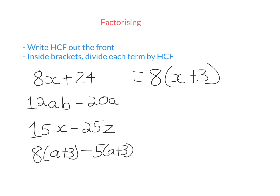Expanding and factorizing undo each other — if I were to expand my answer, I would get what I started with. So how do I do something like this? The highest common factor is going to involve a letter and a number. The highest number that goes into 12 and 20 is 4, and both terms also have an a in common. So what do I times by 4a to get 12ab? I need to times by 3 to get to 12, and then also by b to get 12ab. What do I times by 4a to get negative 20a? I need to times by negative 5.